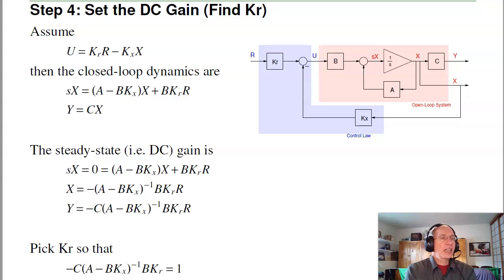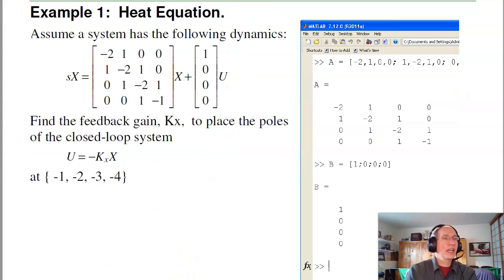Once I find my feedback gains KX, I can find Kr. Assuming I want to make the DC gain 1, which is pretty typical. I want the output to follow the setpoint. Pick Kr such that the DC gain of this system is 1. The DC gain is C times, let's see, the open-loop system: use Kr minus KXX. X dot equals A minus BKX plus BKrR, Y equals CX. At steady state the DC, S equals 0. So solve for X, substitute, and here's the closed-loop gain: minus C, A minus BKX inverse, BKr. Pick Kr so that the DC gain is 1. And there you have it. That's Bass Gura.